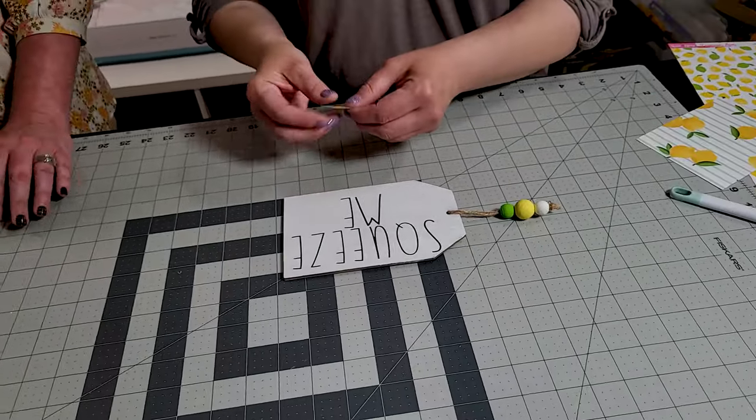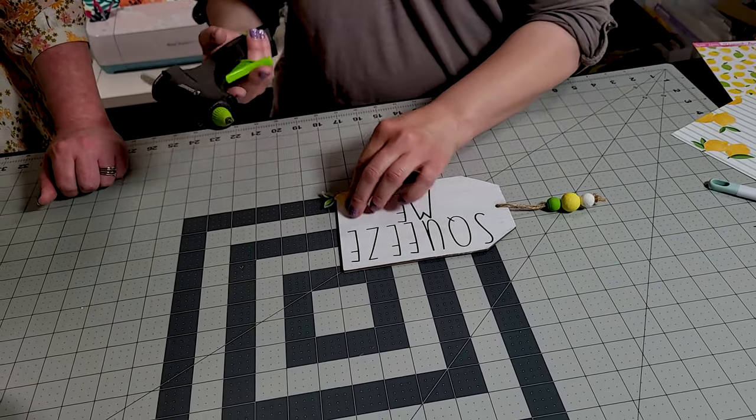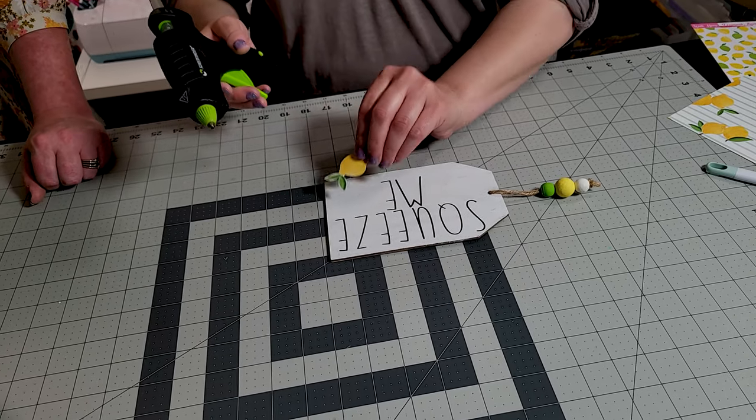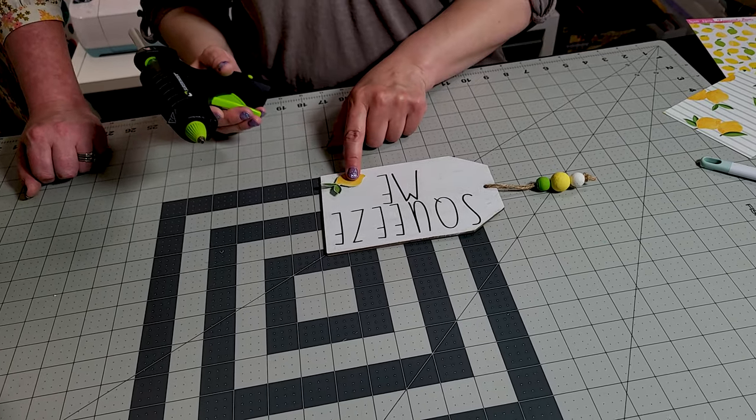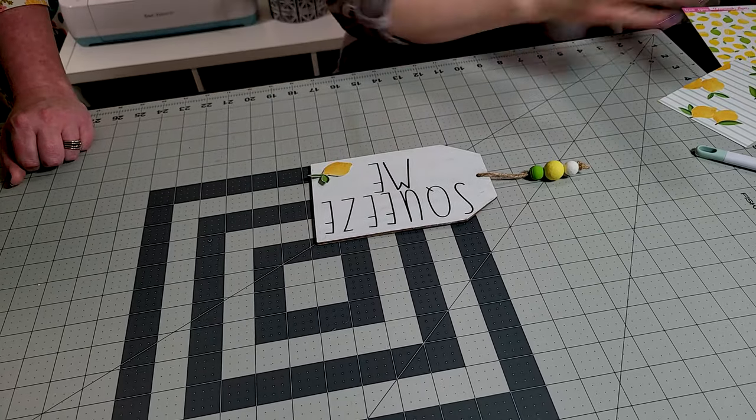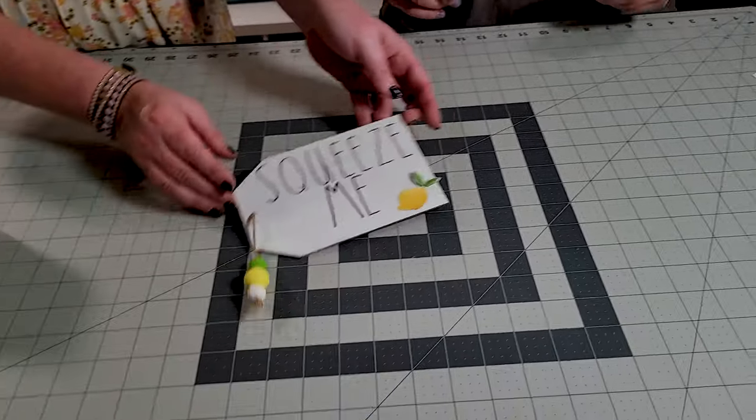I lost my lemon. It was hiding. It didn't want to get squeezed today. A little dot of glue. That cute little lemon on there. Okay. There you go. So cute. That's some hot glue people. All right. There you go.